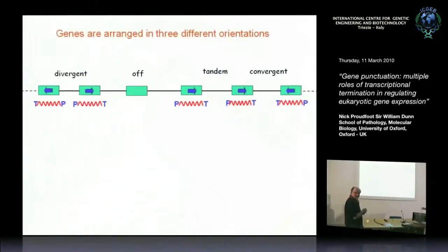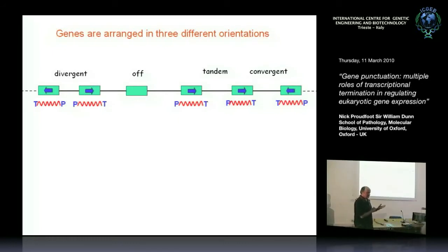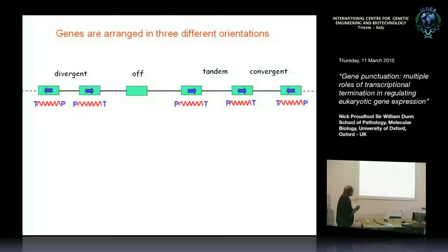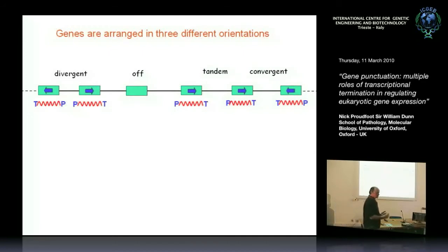The idea is that all genes are arranged along chromosomes, and the theme of this talk is that the orientation of genes along the chromosome matters. Depending on whether genes run in the same direction — tandem — or away from each other — divergent — or towards each other — convergent — you can get effects between adjacent genes.